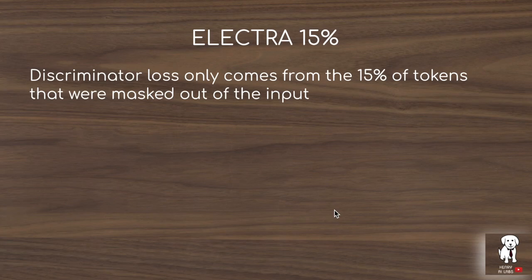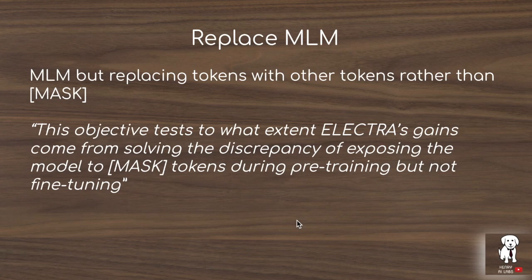In the Replace-MLM task, instead of masking 15% of input tokens with the special mask token, you replace them with randomly sampled tokens. The model then processes the entire sequence and the loss is only defined on these randomly swapped tokens. This solves the discrepancy of introducing the mask token in the pre-training objective.